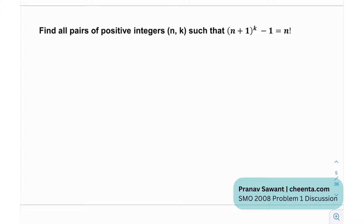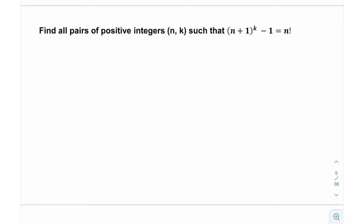Whenever I see this kind of Diophantine equation — especially factorial and exponential Diophantine equations — we have an exponential term on one side and a factorial term on the other. As I've said many times before, these two things do not go well with one another. Equating these two things is a big challenge, and only certain numbers can satisfy that equality. So the intuition is that there are probably just a small number of solutions — maybe two or three solutions and that's it.